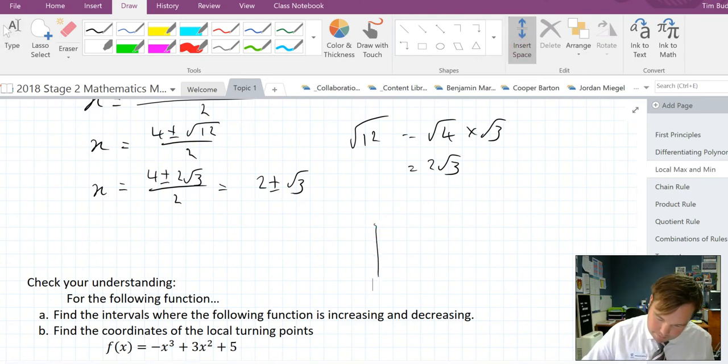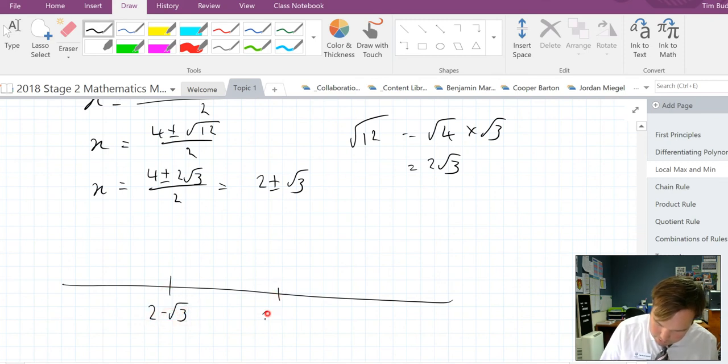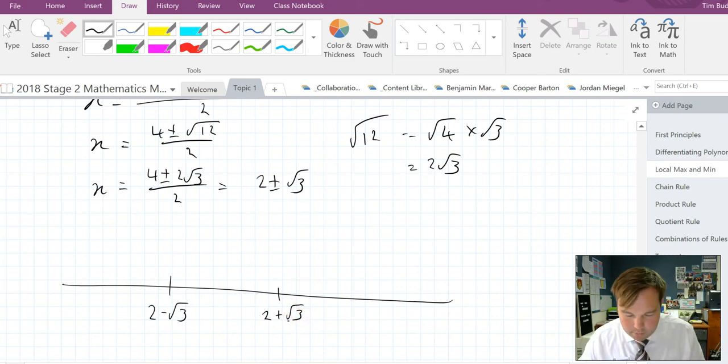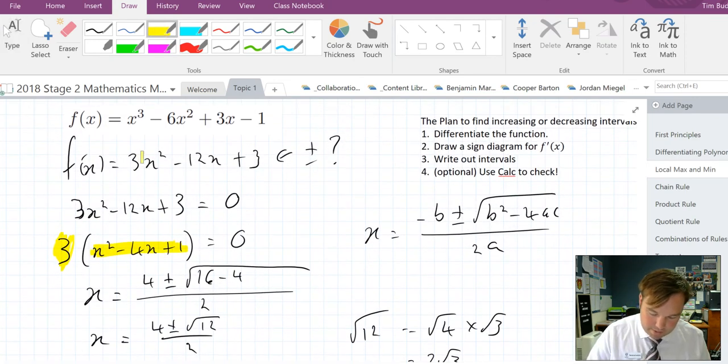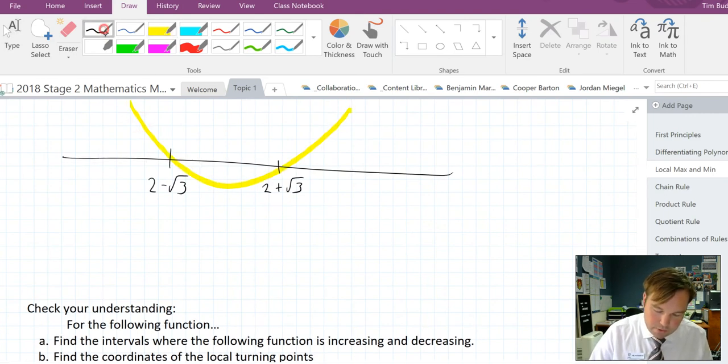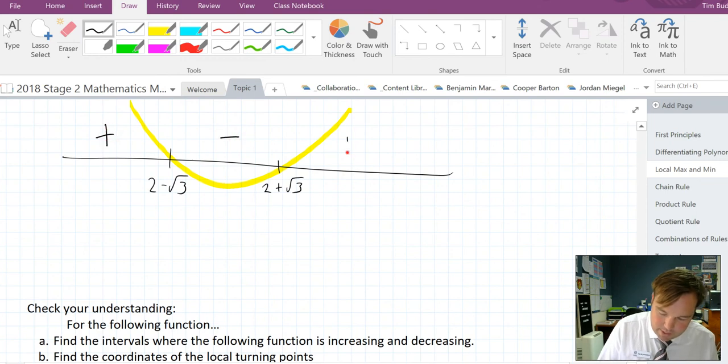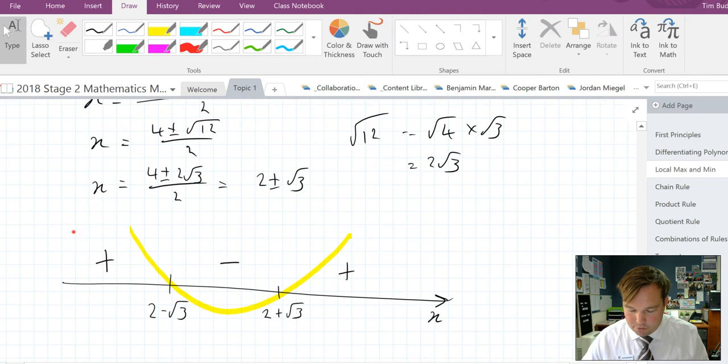So the sine diagram looks the following. It should go like this and it will turn at 2 take root 3 and 2 plus root 3. Now we have to use our knowledge of functions here to figure out where it's going to be positive and where it's going to be negative. Originally we had a quadratic with a positive leading coefficient. Quadratic with a positive leading coefficient means we've got one that looks like this. So here it will be increasing, decreasing, increasing. And that's as x goes on. So our cubic would be increasing until 2 take root 3 and then decreasing and then increasing again from 2 plus root 3.